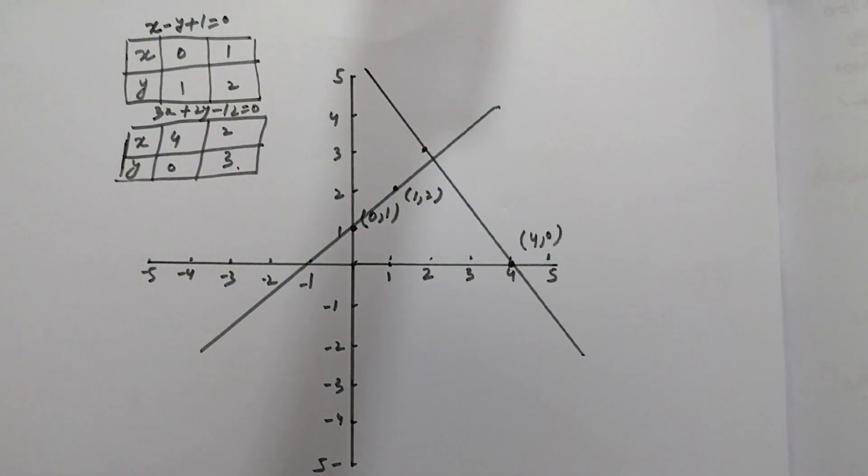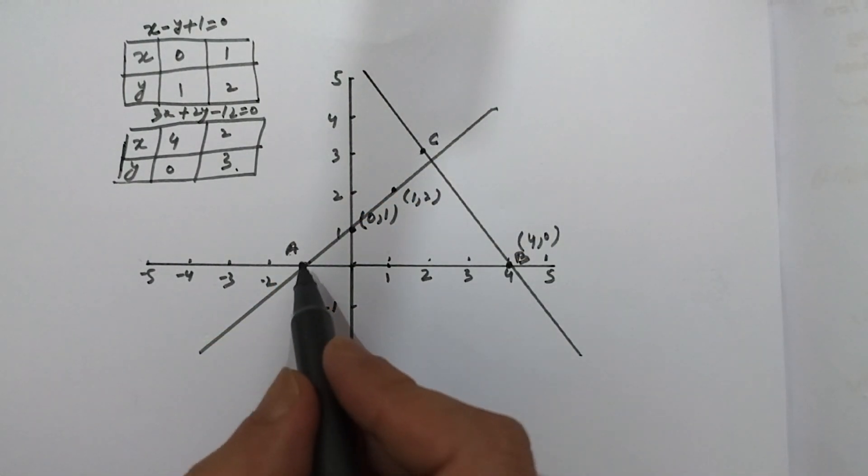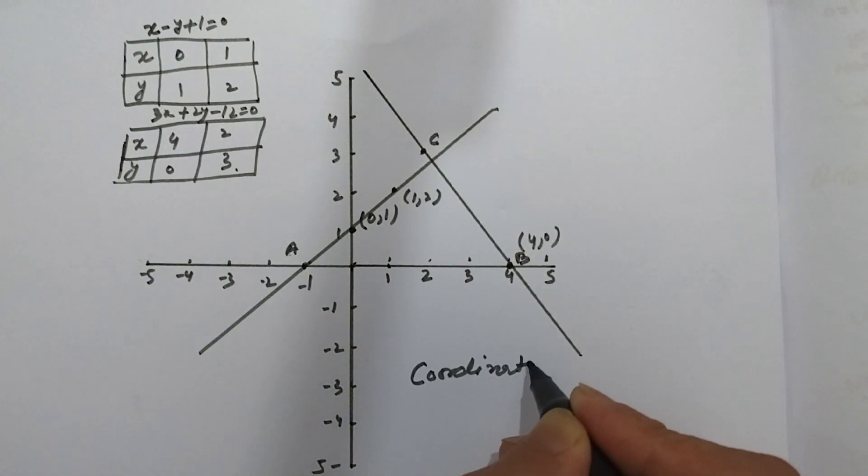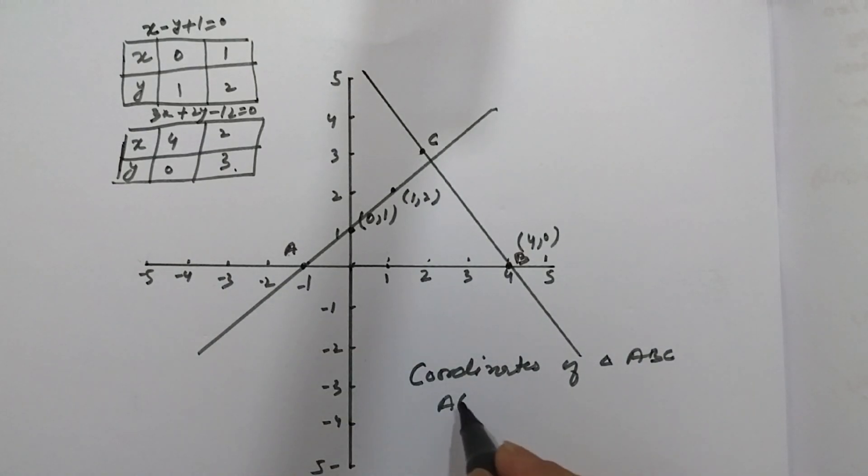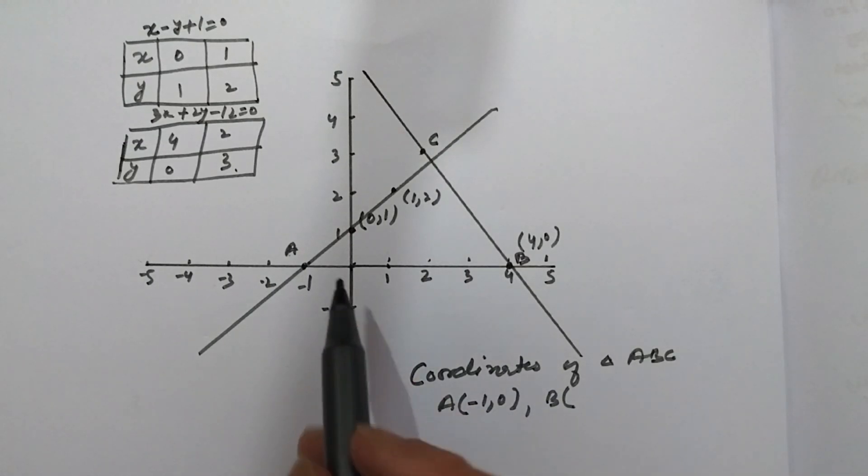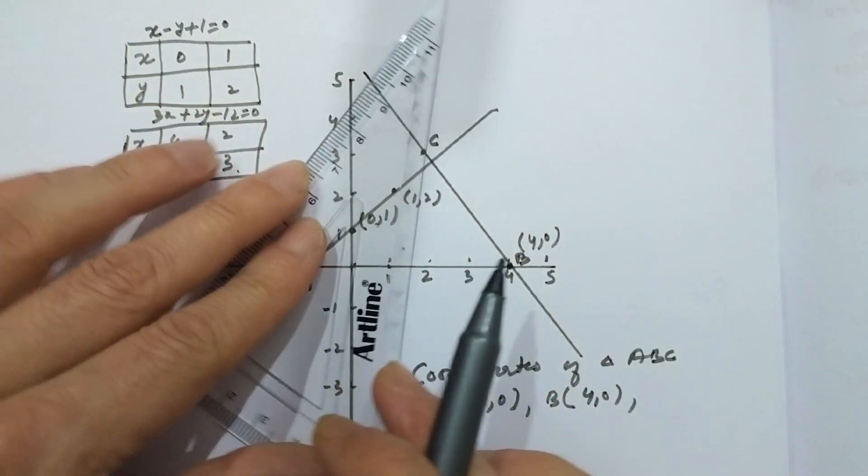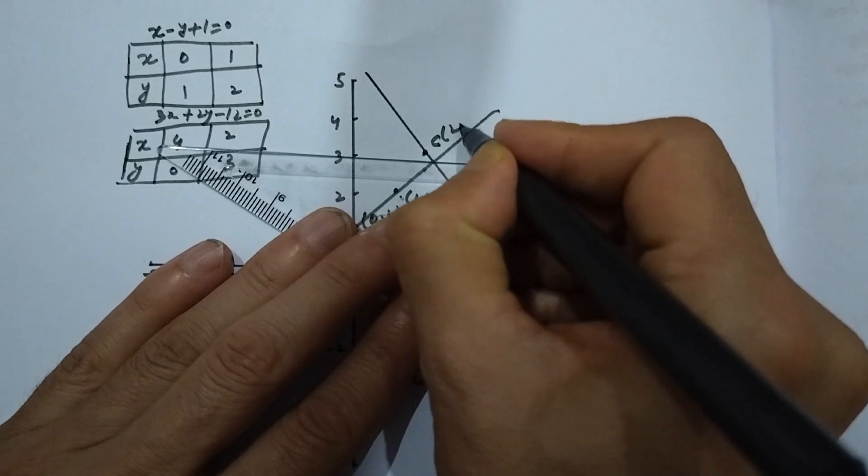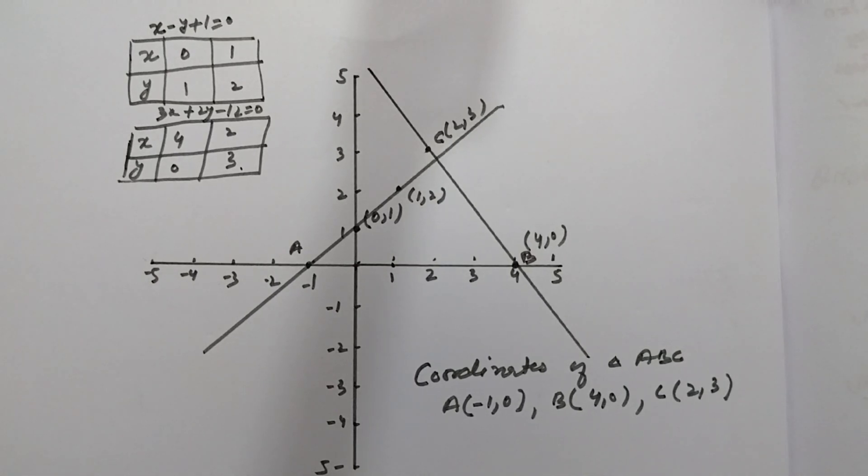Now we identify the triangle vertices formed by the two lines and the x-axis. The coordinates of the triangle ABC are: A is at minus 1 comma 0, B is at 4 comma 0, and C is at 2 comma 3. I hope you understand.